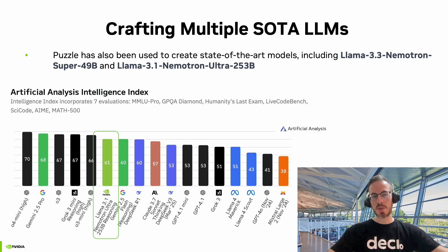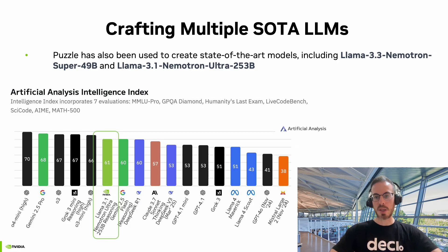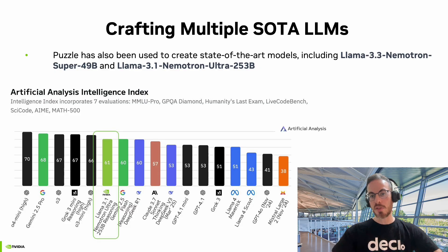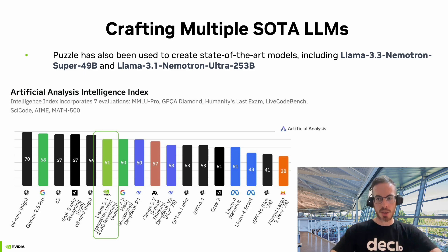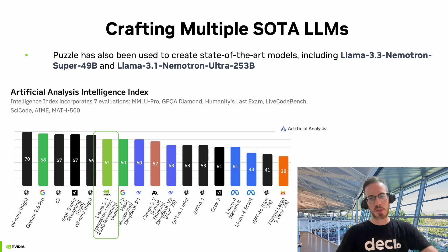Puzzle has been used by Fox and NVIDIA to craft multiple state-of-the-art LLMs. Some notable ones are Nematron Super 49B, which is especially suitable for deployment on a single H100 GPU, and Nematron Ultra 253B, which, as of May 2025, is the highest-ranking open-weights model in the Artificial Analysis Intelligence Index, while being much faster than other open models with similar scores, such as DeepSeek.